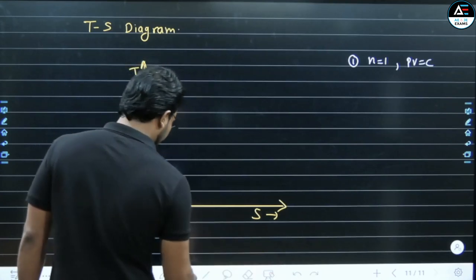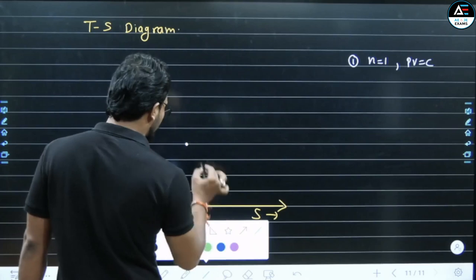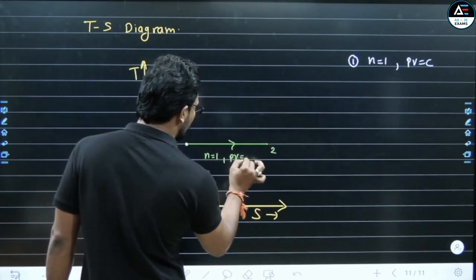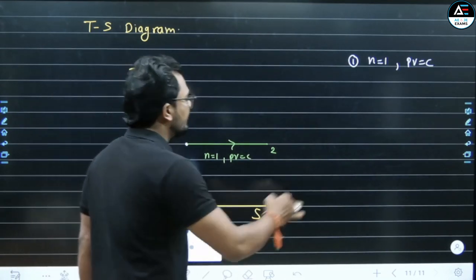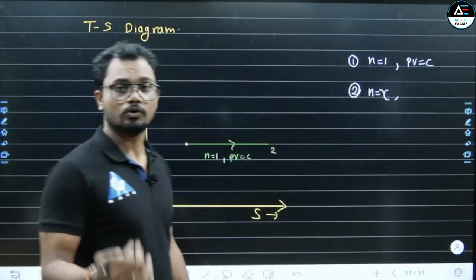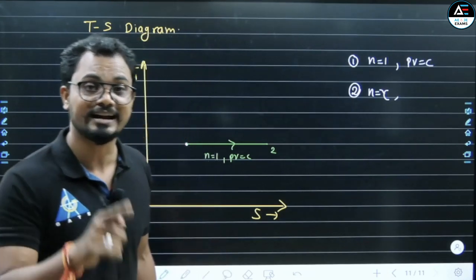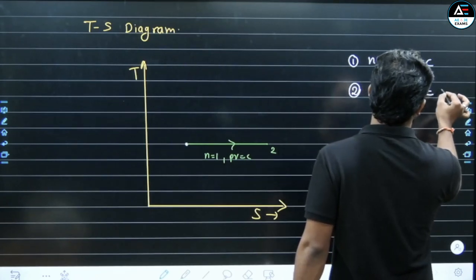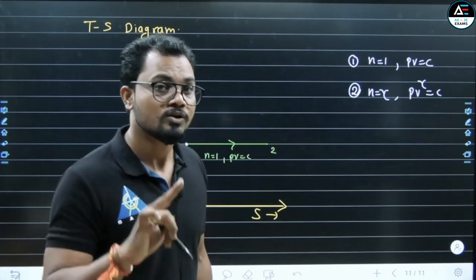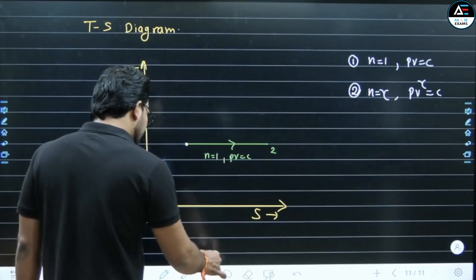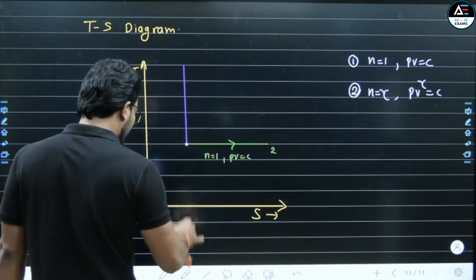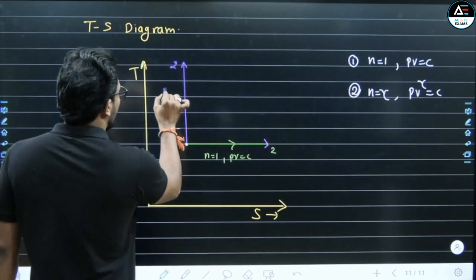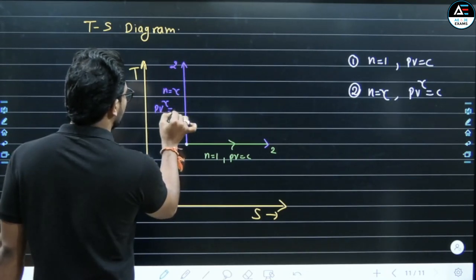Similarly, second: N = gamma represents PV raised to power gamma = constant — reversible adiabatic or isentropic process. To draw the isentropic line on the TS diagram, since entropy is constant, it is a vertical line. So the isentropic line is a vertical line — that is point 1 to 2. N = gamma, PV raised to power gamma = constant. Is it clear?